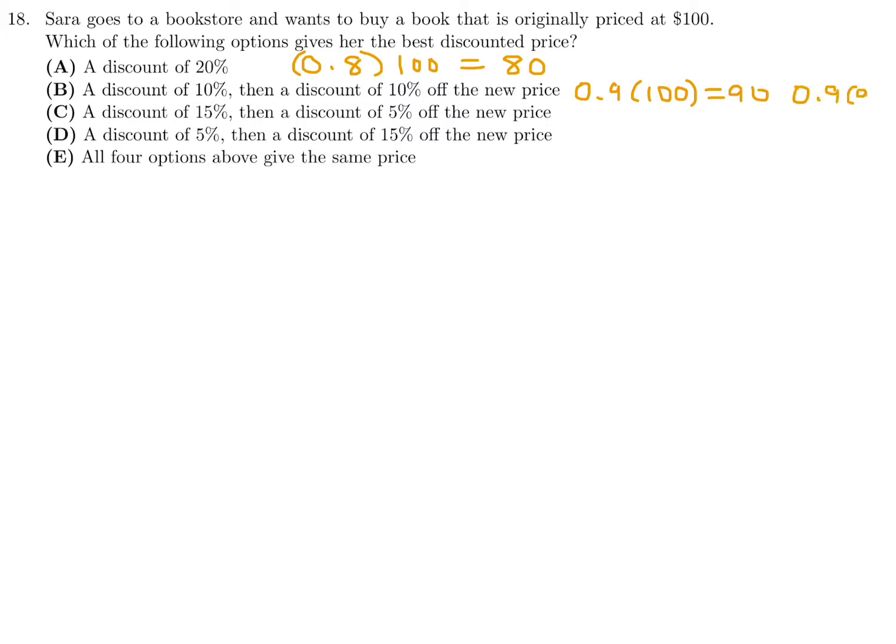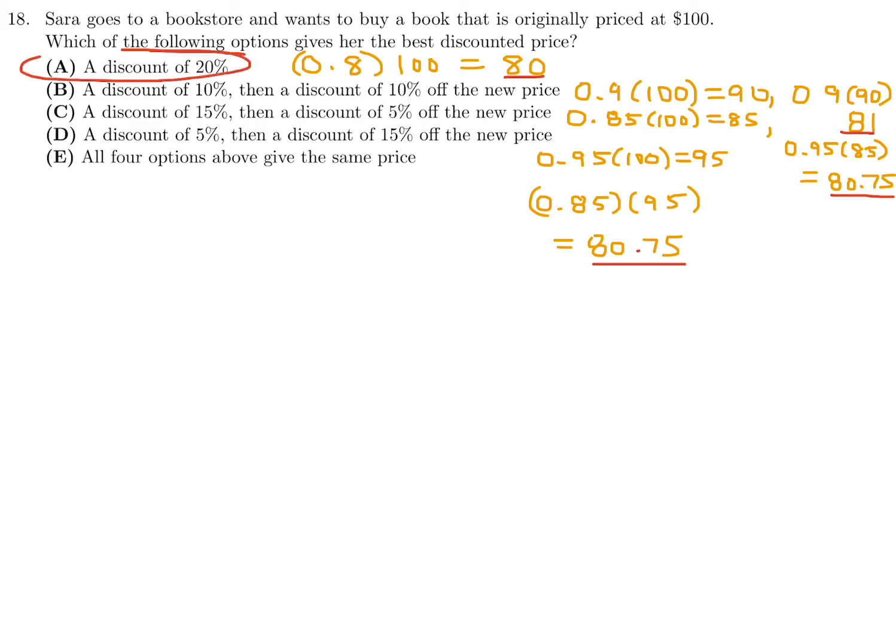Same thing for C: 15%, so 0.85 times 100, that gives me 85. Then a discount of 5%: 0.95 times 85, that gives me 80.75. And then the last one: discount of 5%, so 0.95 times 100, which is 95, and then a 15% discount would be 0.85 times that 95, and that gives me 80.75. So which one of these is the lowest? Is it 80, 81, 80.75, or 80.75? Well obviously the lowest is 80, so the answer is A for number 18.